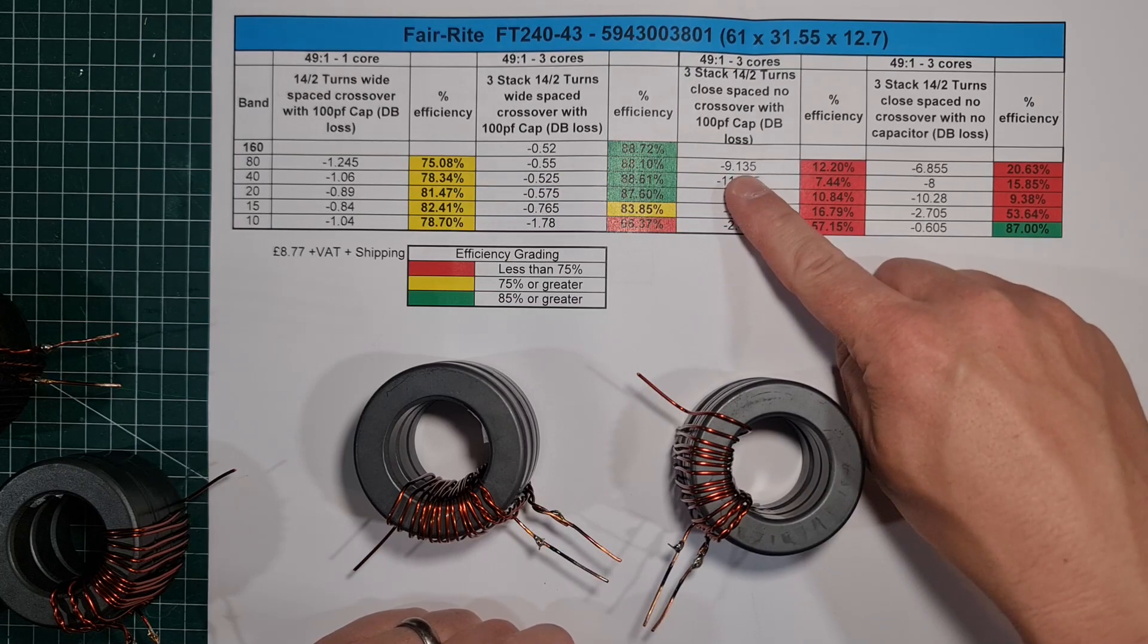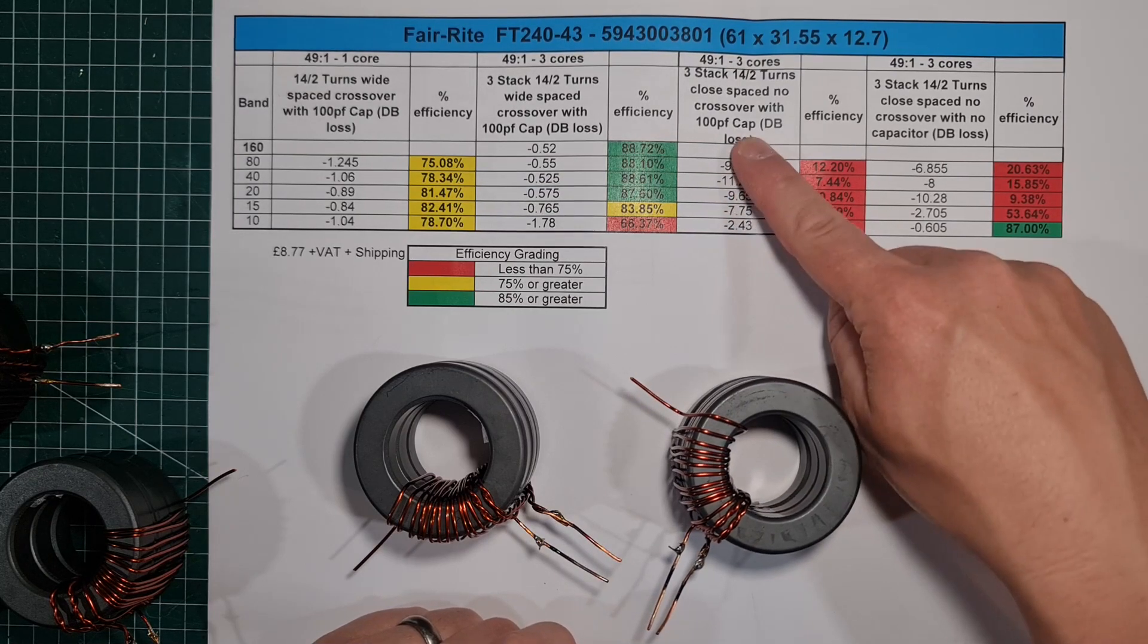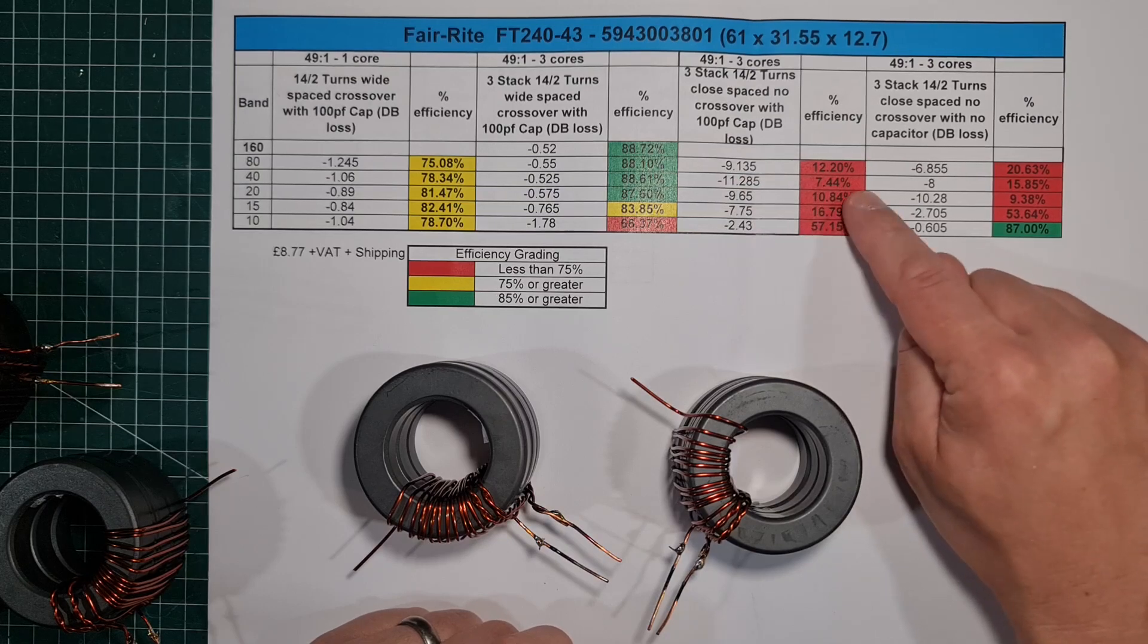In the end, I actually had to recalibrate the Nano VNA four times with different connectors because I simply didn't believe the results. If you start looking at the loss you're getting with these three-stack, with the capacitor, they're just incredible losses.